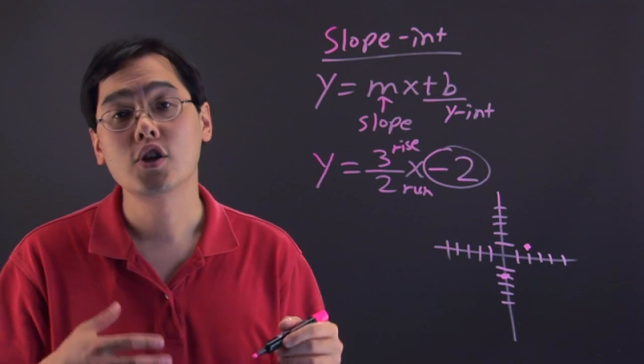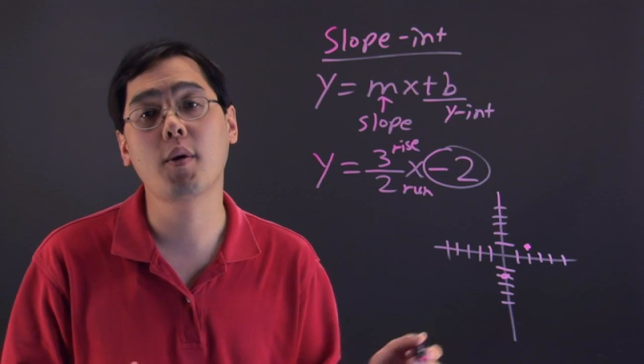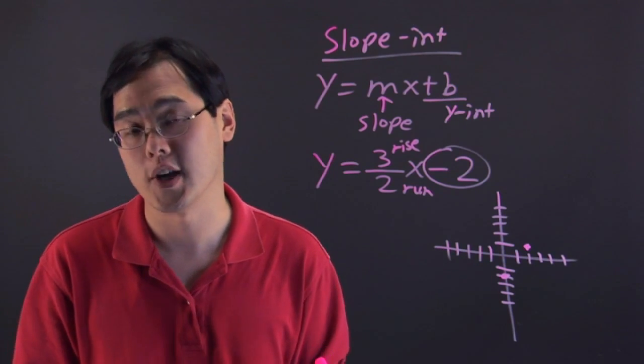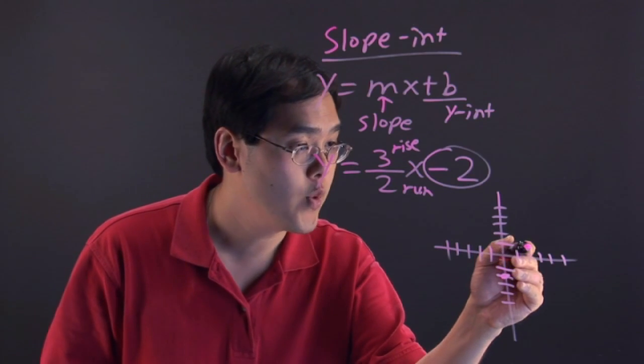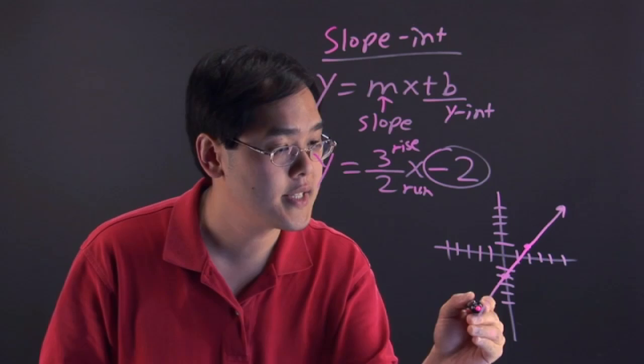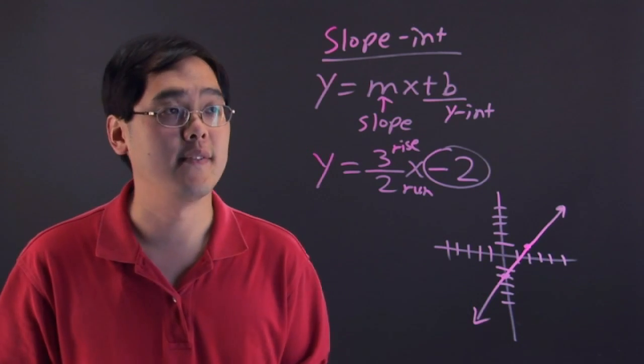And all you really need is two points for a line, but you can go up 3 over 2 to get a third point if you wish, if you want to double-check your answers. But in this case, we can just graph the line as it stands, and there you have it.